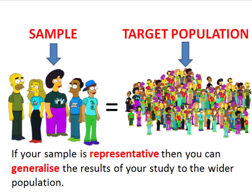Now ideally samples should be as representative of the target population as possible. This simply means that our sample should reflect the group as a whole. In other words, our smaller group — our sample — needs to be a good cross section of the types of people that we would find within our target population. And if our sample is representative, then we can generalise the results from our smaller group to the wider population.